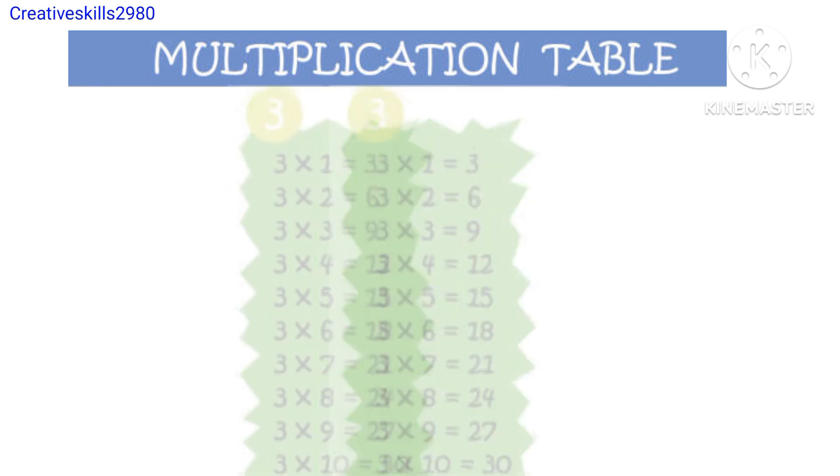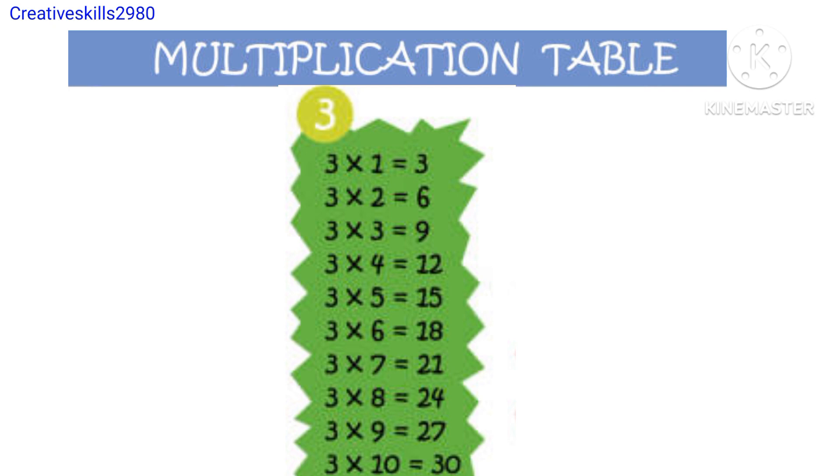2 10s are 20. 3 1s are 3, 3 2s are 6, 3 3s are 9, 3 4s are 12, 3 5s are 15, 3 6s are 18, 3 7s are 21, 3 8s are 24, 3 9s are 27, 3 10s are 30.